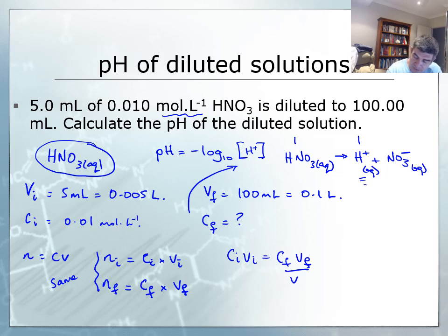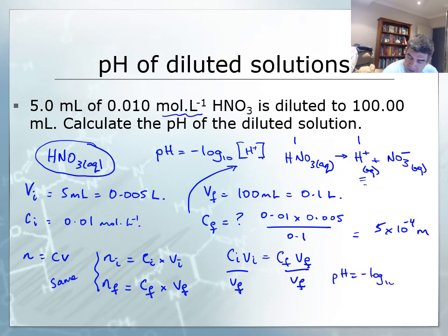If I divide both sides by V final, the final concentration is 0.01 times 0.005 divided by 0.1, which gives me 5 times 10 to the minus 4 moles per litre. To find my pH, pH equals minus the log base 10 of 5 times 10 to the minus 4, and that gives me a pH value of 3.3.